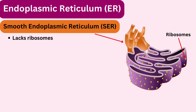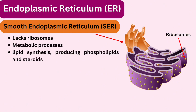The smooth ER is involved in diverse metabolic processes. It plays a central role in lipid synthesis, producing phospholipids and steroids. Additionally, it participates in detoxification processes, helping to break down drugs and toxins, particularly in liver cells.